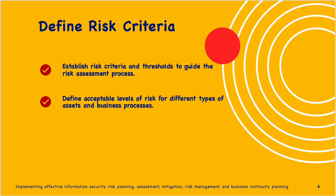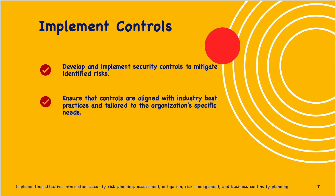Consider time horizons — specify the time horizon for risk assessment and determine whether risk criteria are applicable for short-term, medium-term, and long-term planning. The next step is implementing controls. Develop and implement security controls to address identified risks. Ensure that controls are aligned with industry best practices and tailored to the organization's specific needs, as every department and organization will have a different approach to implementing controls.